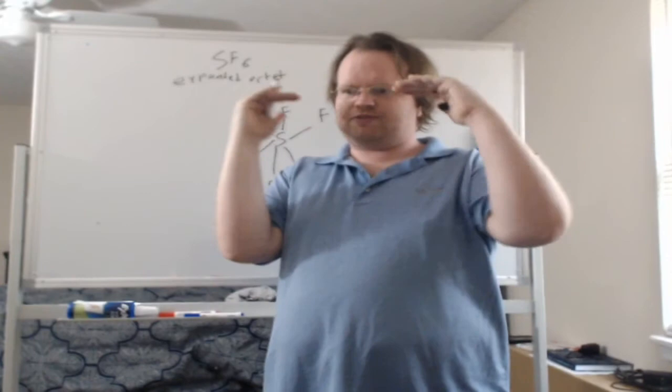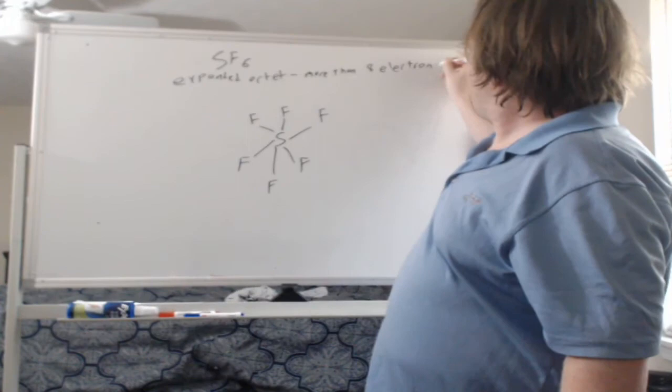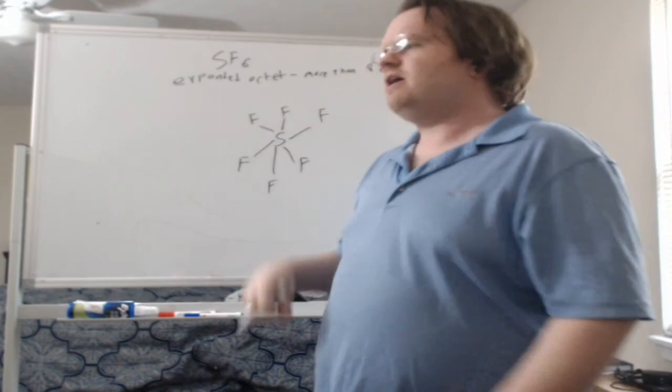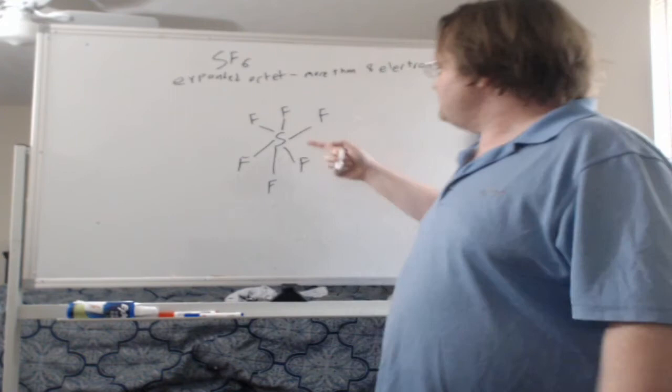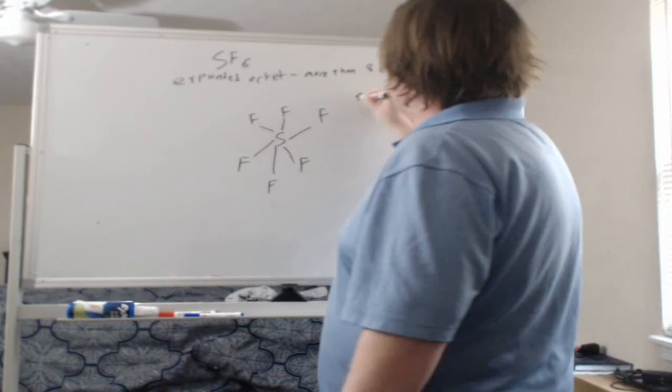So our atoms in row, once we get to the third period, so the third row or below, can have an expanded octet. So more than eight electrons. Now the only time we're going to do this is when we either have extra electrons we have to put on the center atom, or if it's bonded to more than six things. So you don't have to predict like, oh wait, should this molecule have that? You don't yet know, you don't have enough chemistry knowledge to be able to go, well this one definitely should have more. We're going to have cases where you can predict it using the rules I've shown you.